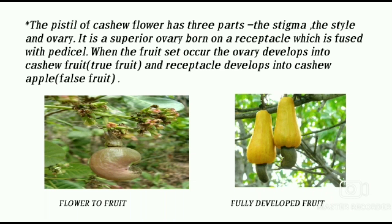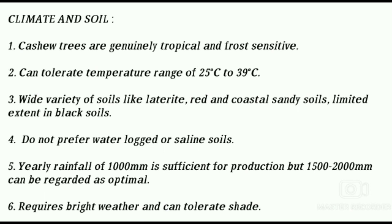The receptacle develops into a cashew apple, called the false fruit. Cashew trees are genuinely tropical and frost sensitive. They can tolerate a temperature range of 25°C to 39°C. Wide varieties of soils like laterite, red, and coastal sandy soils are suitable. Limited extent in black soils. They do not prefer waterlogged or saline soils. Yearly rainfall of 1000 mm is sufficient, but 1500 to 2000 mm can be regarded as optimal. The tree requires bright weather and can tolerate some shade.